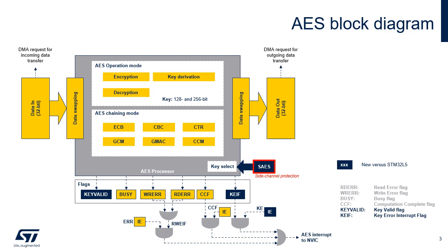The read error flag, or RDR, is set in the AES status register when an unexpected read operation is detected during the computation phase or during the input phase. An interrupt can be generated when one of these two error flags is set, if the read or write error interrupt enable, or RWEIE bit, in the AES interrupt enable register was previously set.